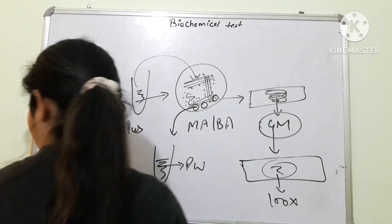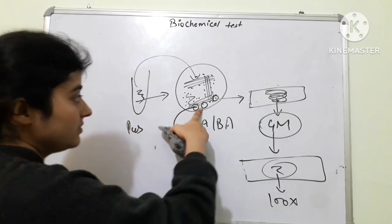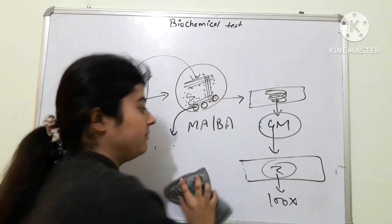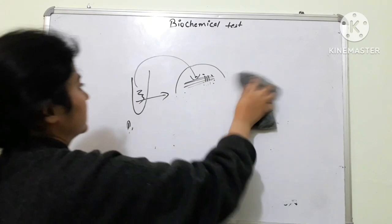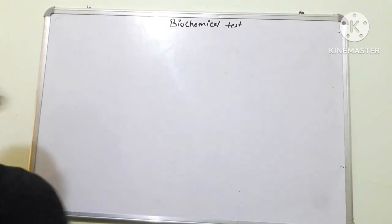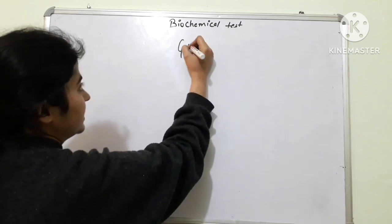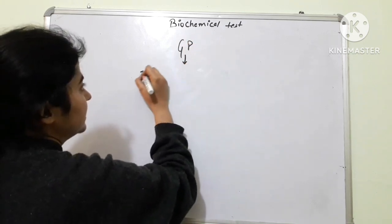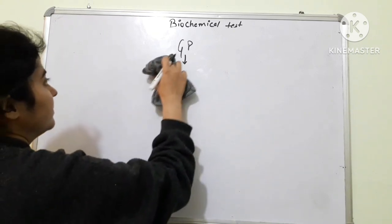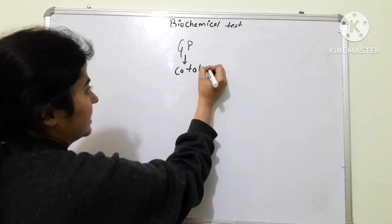So let's start with gram positive first. For example, the colony you have taken out from this petri plate is gram positive. If it is gram positive, then the first test we will perform is the catalase test.